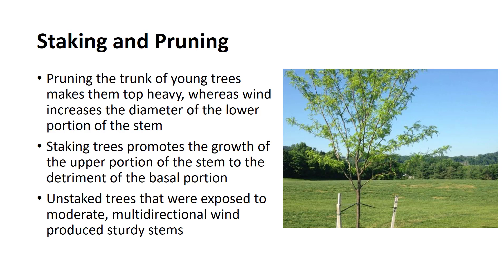Whereas the action of wind induces a preferential distribution of the photosynthates toward increasing the diameter of the lower portions of the stem, making it thicker. Staking young trees has a tendency to promote growth of the upper portion of the stem to the detriment of the basal portion.